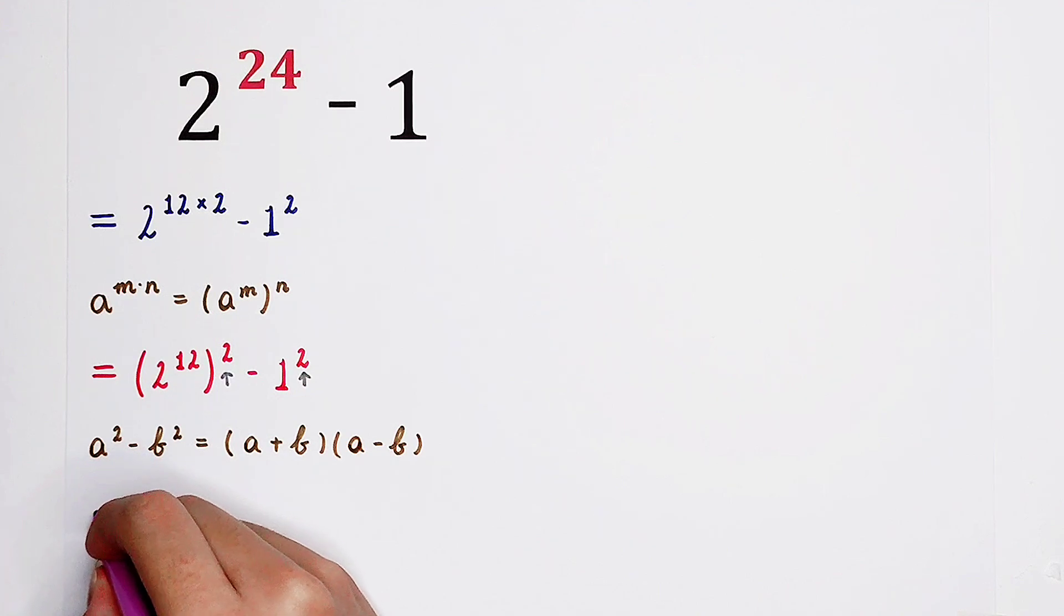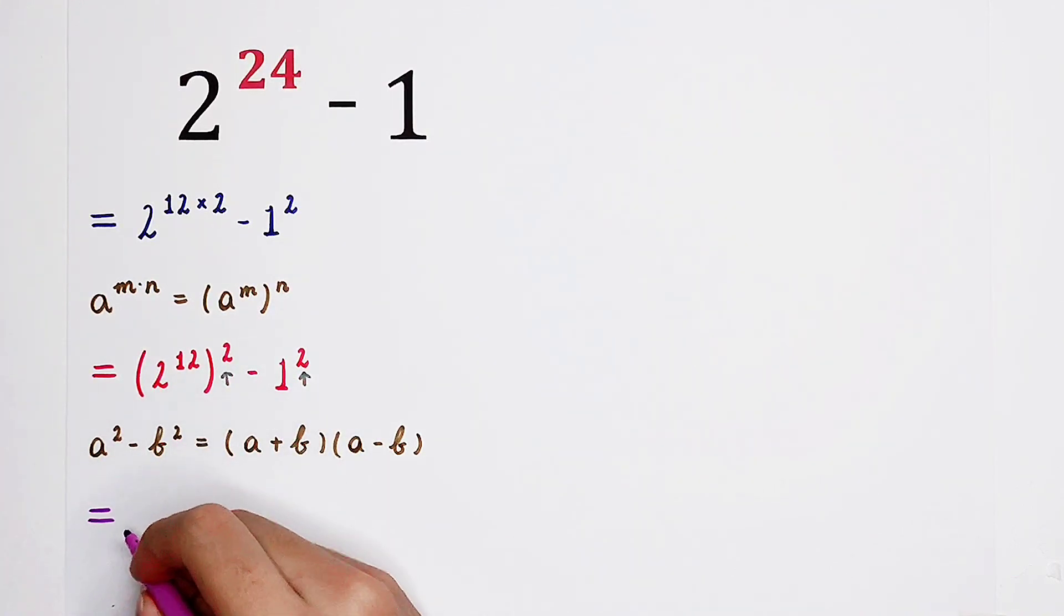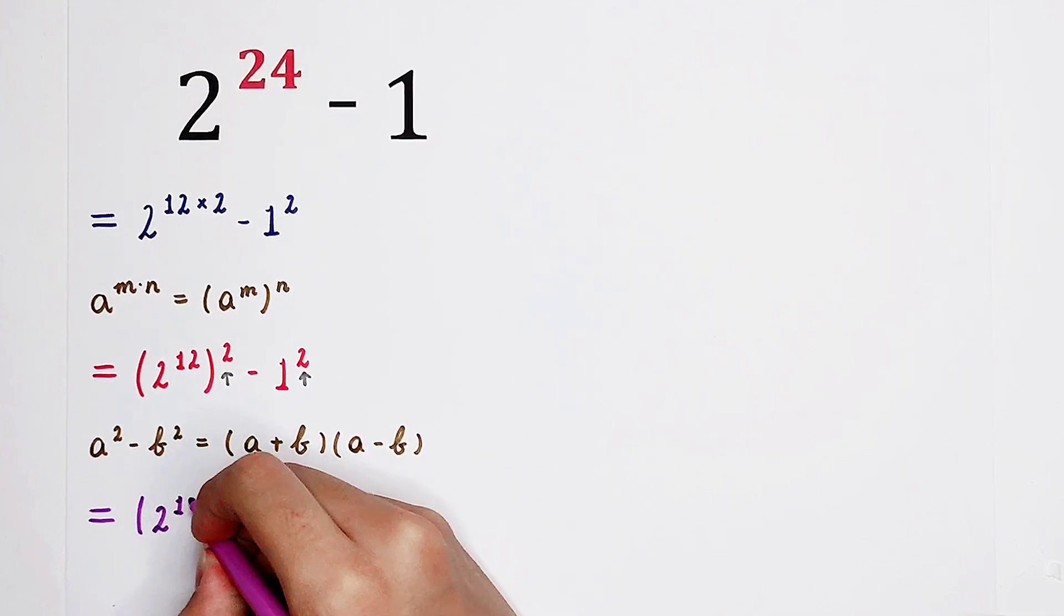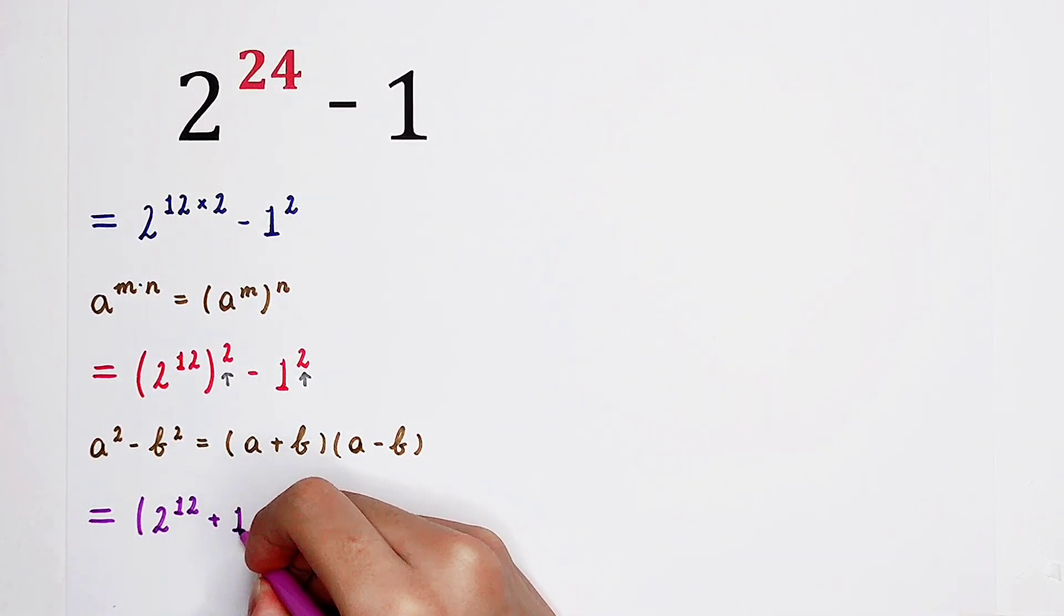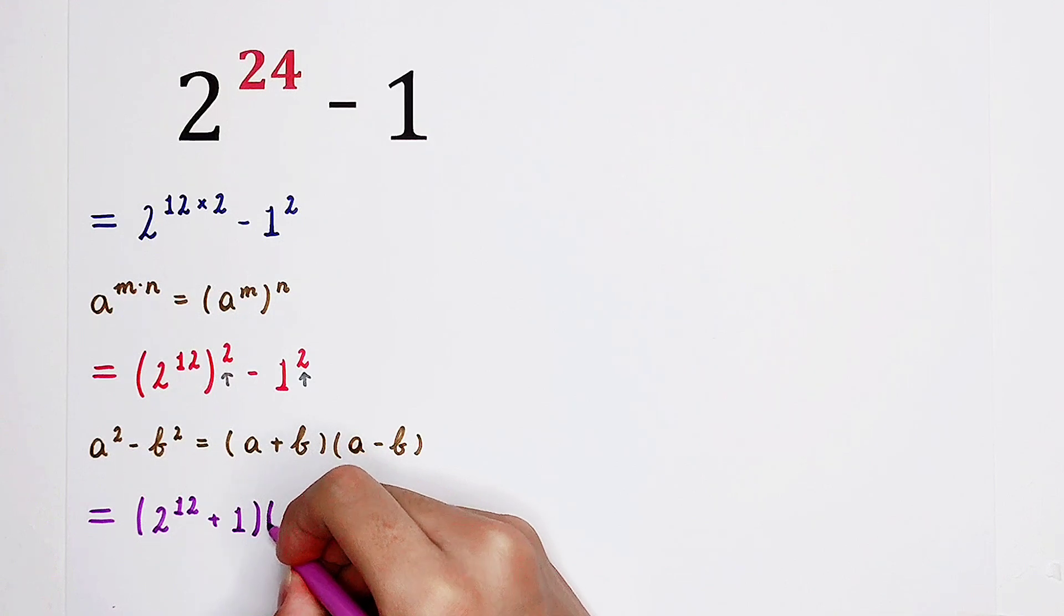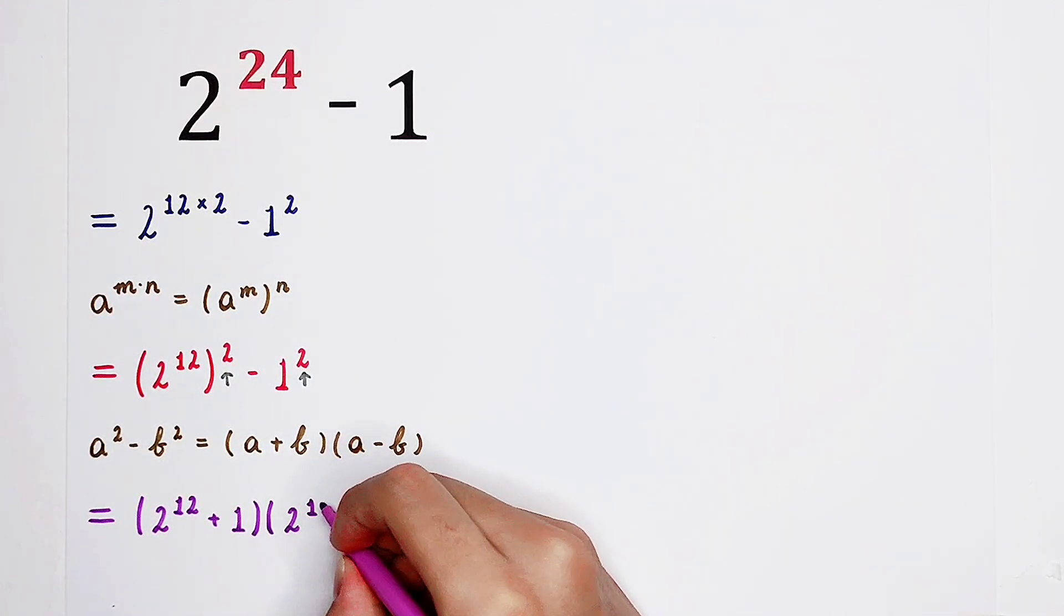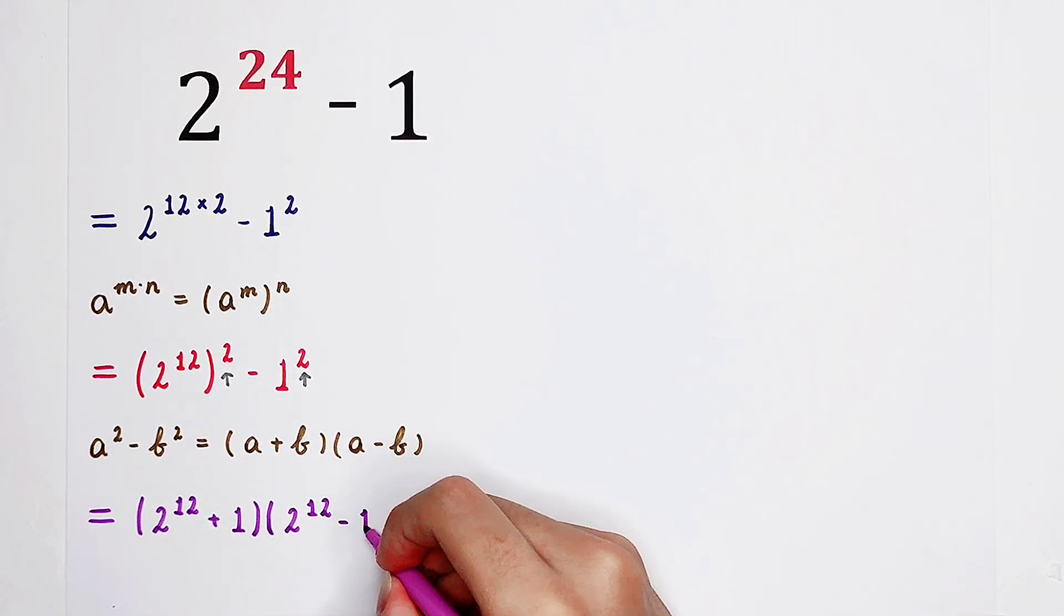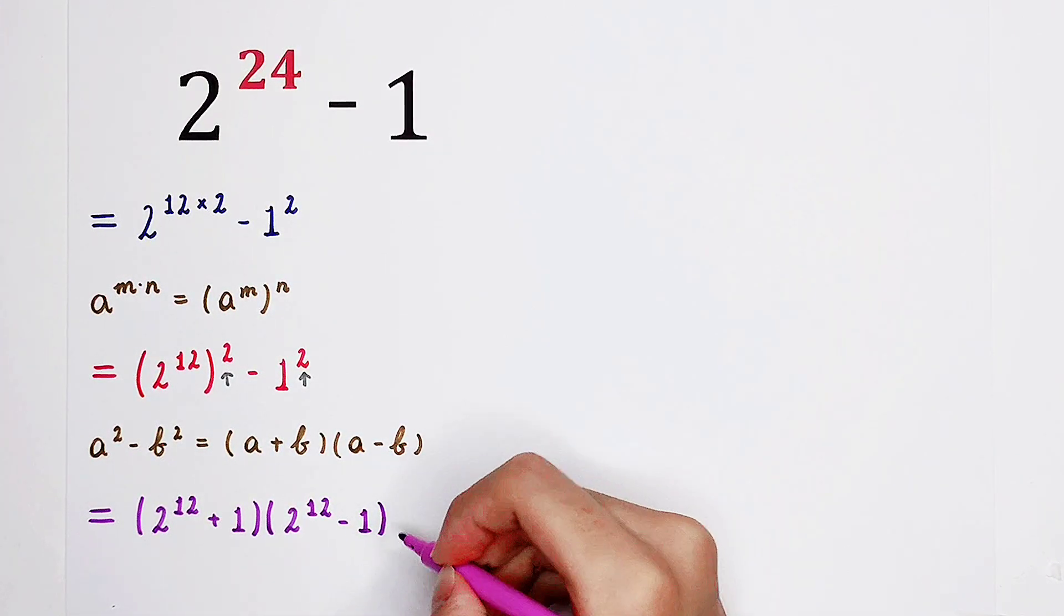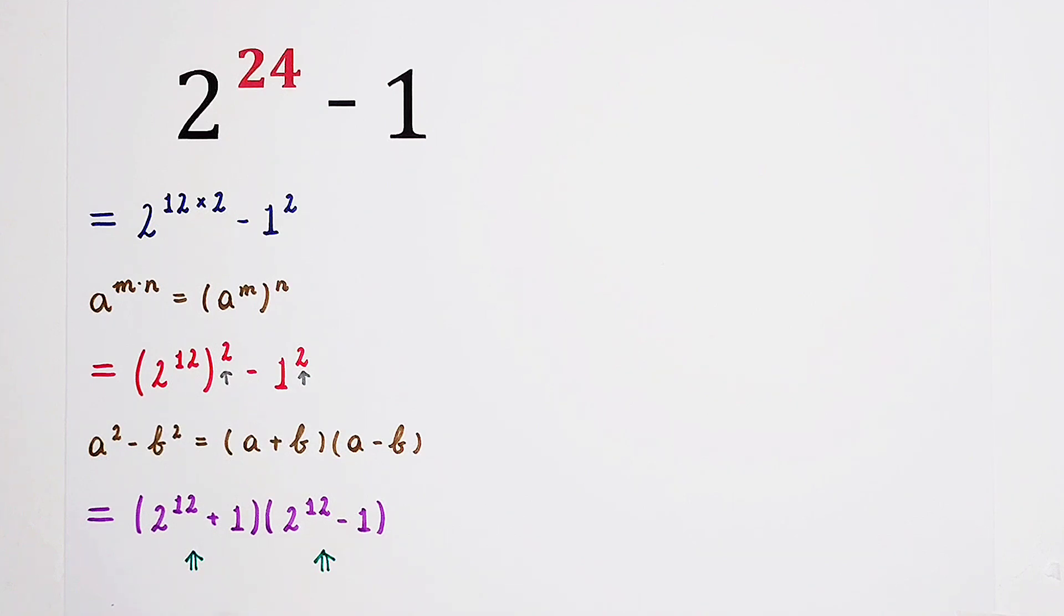The sum of a and b and the subtraction of a and b. For our next step, a is 2 to the power of 12, b is 1. So it is 2 to the power of 12 plus 1, and then times 2 to the power of 12 minus 1. Plus 1 minus 1, nothing valuable.